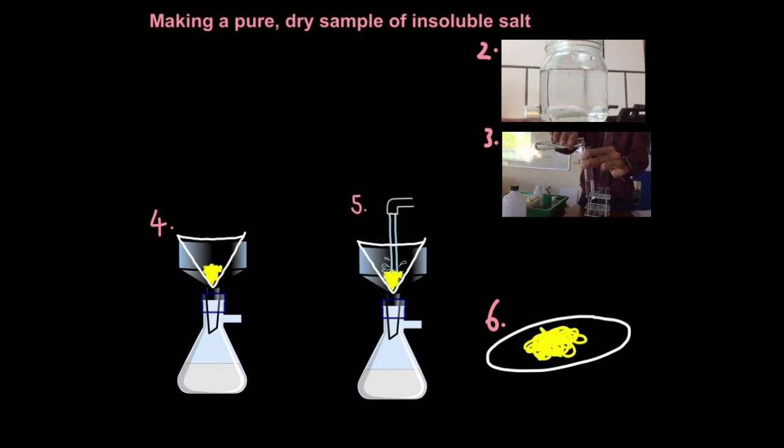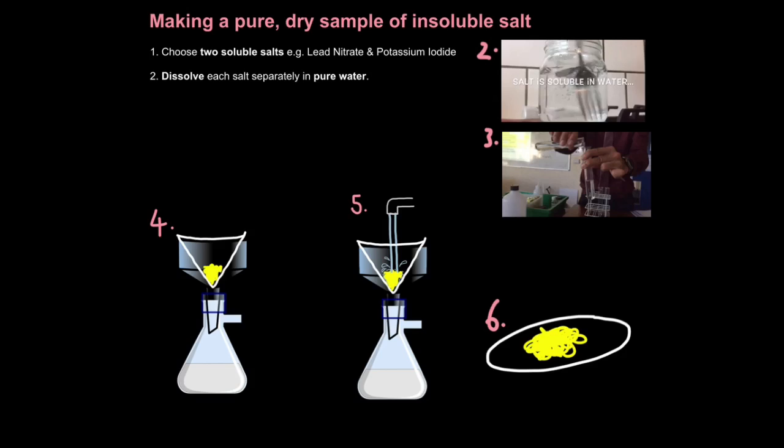Now let's look at one of the most popular chemistry questions in the C2 paper. That is how you make a pure dry sample of insoluble salt. Sometimes it asks how do you prepare a pure dry sample of insoluble salt. Sometimes this question is worth 4 marks, sometimes it's worth 6 marks, it's just about remembering a process. The first thing you have to do is choose two appropriate soluble salts, for example lead nitrate and potassium iodide. Next you have to dissolve each salt separately in pure water.